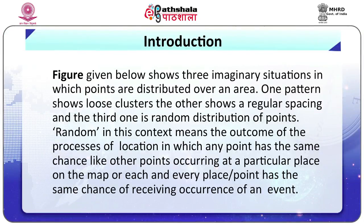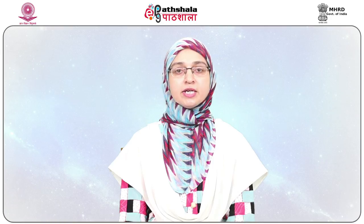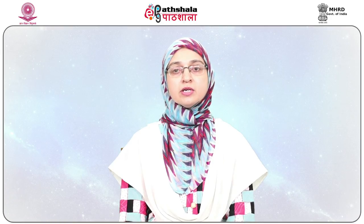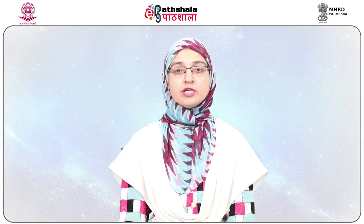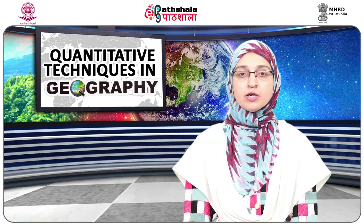Three imaginary situations show points distributed over an area: one pattern shows loose clusters, another shows regulated spacing, and the third is random distribution. Random in this context means any point has the same chance as other points of occurring at a particular place on the map, with each point's location not influenced by others. The nearest neighbor index produces a result ranging from a minimum of 0 to 2.15, forming a continuum of distribution patterns measured as clustered, regular, and random.